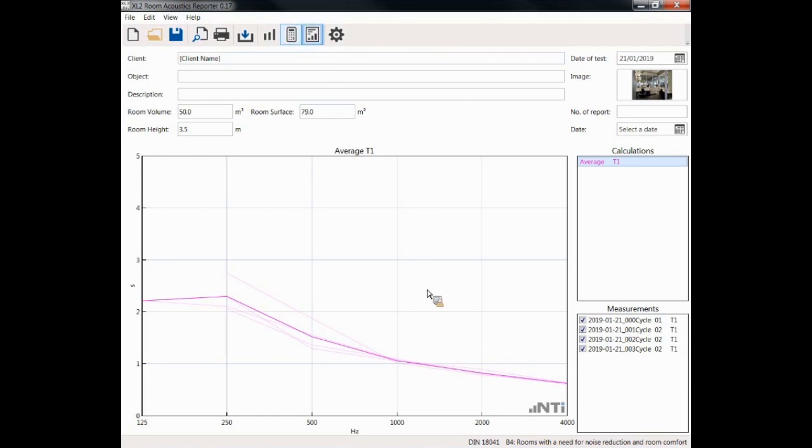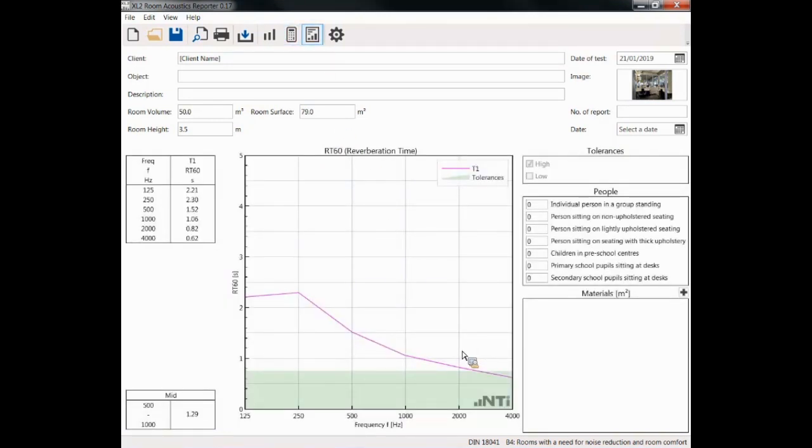We can take a look at the average of these four measurements. Let's take a look at the overall picture. Here we have the average plus the green area shows us the target. The target is given by our selection of the standard and of the room type. Now we see that we are too high, we have to do something about the situation in this room. What can we do? First of all we know that in this office there will be two persons sitting on upholstered chairs.